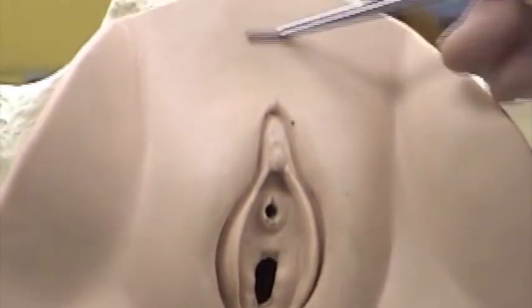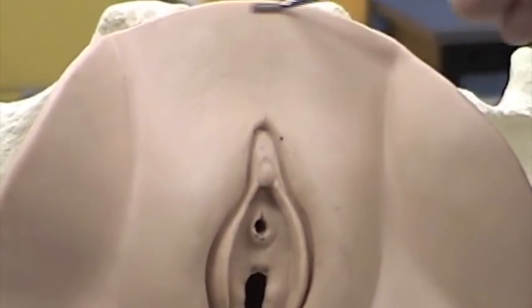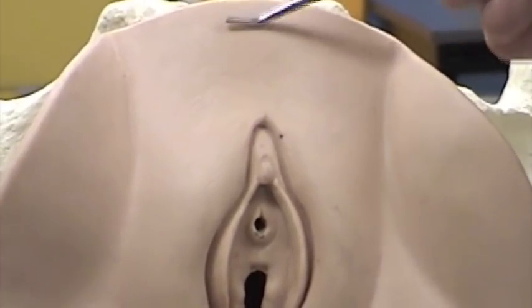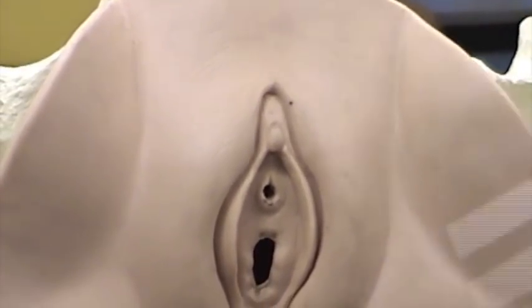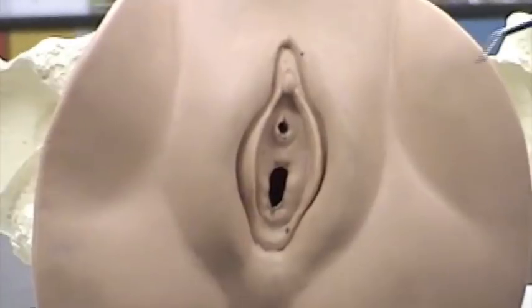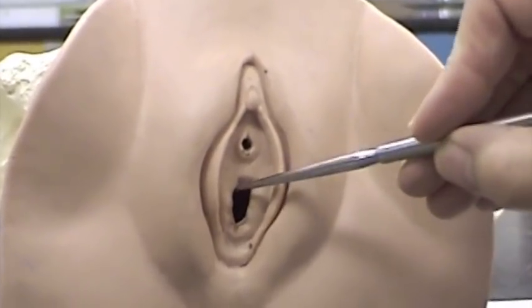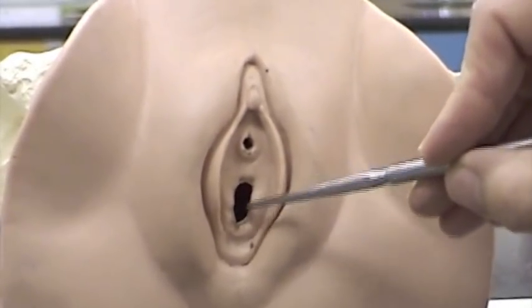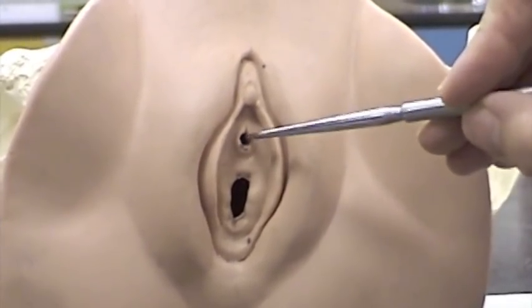The mons pubis is a fat pad in this region right here under the skin. It actually has a thicker fat pad on the female than on the male. These openings are: here is the opening to the vagina, and here is the opening to the urethra.